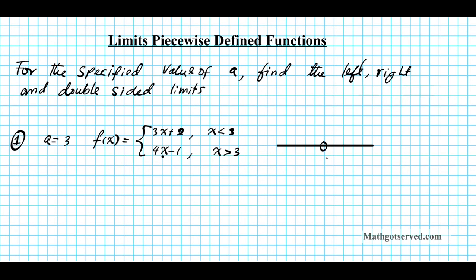The barrier point is at three. To the left of it we have three x plus two. So when you're approaching three from the left, this is the function you're going to be using. And when you're approaching three from the right, this is the function that comes into play: four x minus one.